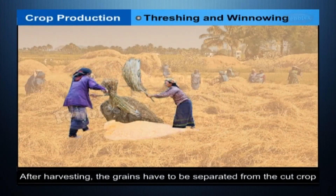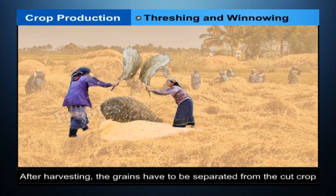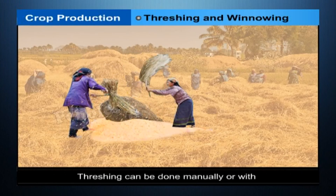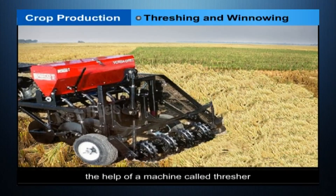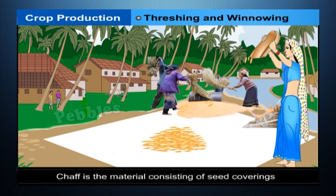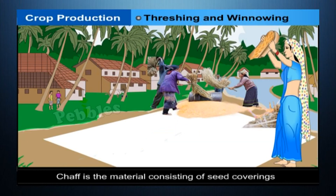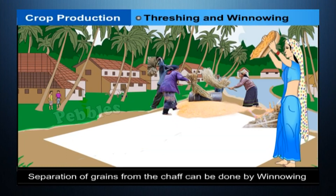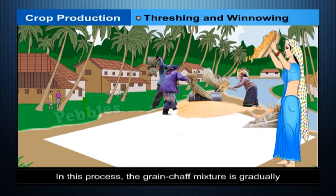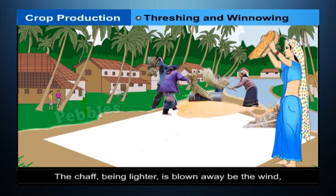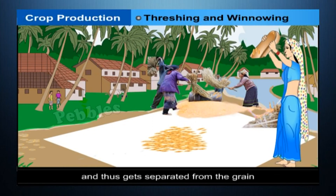Threshing and Winnowing: after harvesting, the grains have to be separated from the cut crop. The process of beating out the grain from the crop is called threshing, which can be done manually or with the help of a machine called a thresher. The grains then need to be separated from the chaff — the material consisting of seed coverings and small pieces of stem or leaves. Separation of grains from the chaff is carried out by winnowing, where the grain-chaff mixture is dropped from a height and the lighter chaff is blown away by the wind.